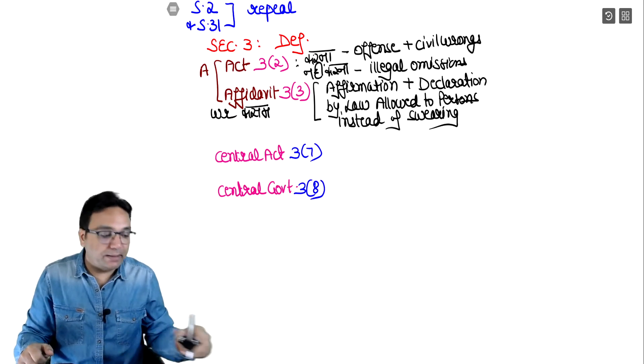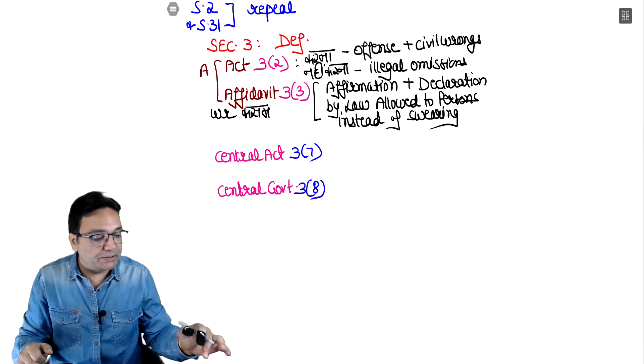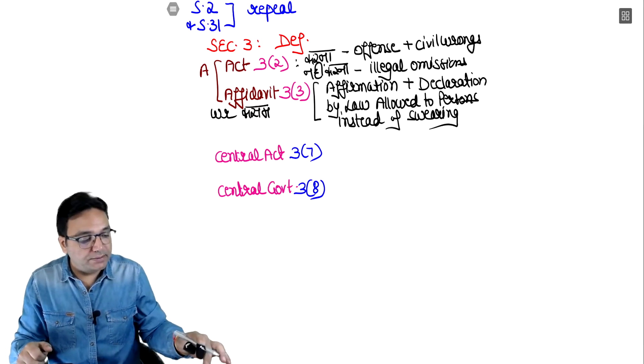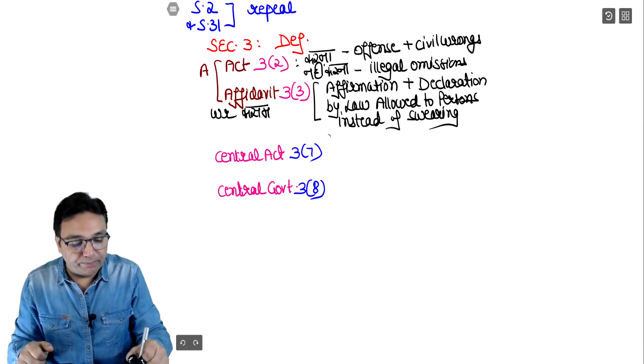The central act's definition - and is it a part of the house - so many of them: you can take a central act and the second is central government. Central act is subsection 7, and central government is subsection 8. So central act and the name central government - means and includes.